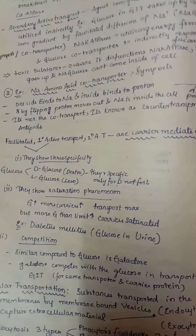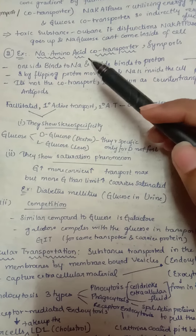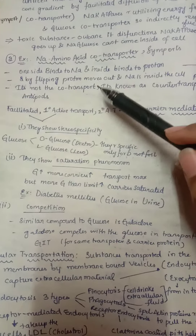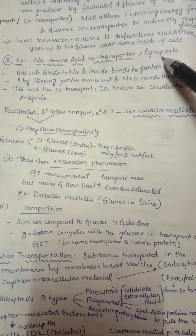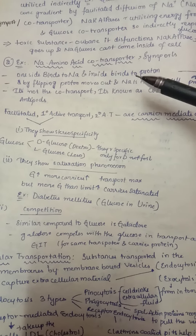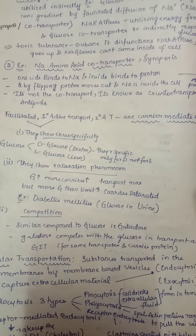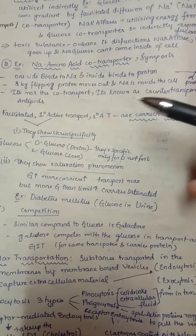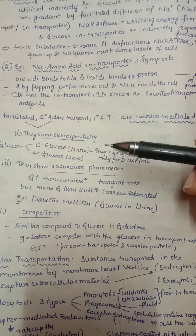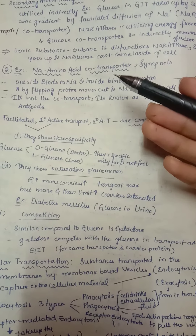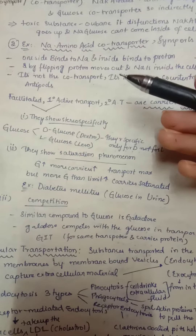In primary active transport, energy is used directly; in secondary active transport, energy is used indirectly. Another example is the sodium-amino acid co-transporter, also a symport, where sodium and amino acids both enter the cell via a co-transporter. One moves by facilitated diffusion and the other moves against its concentration gradient using the energy of the facilitated diffusion part.